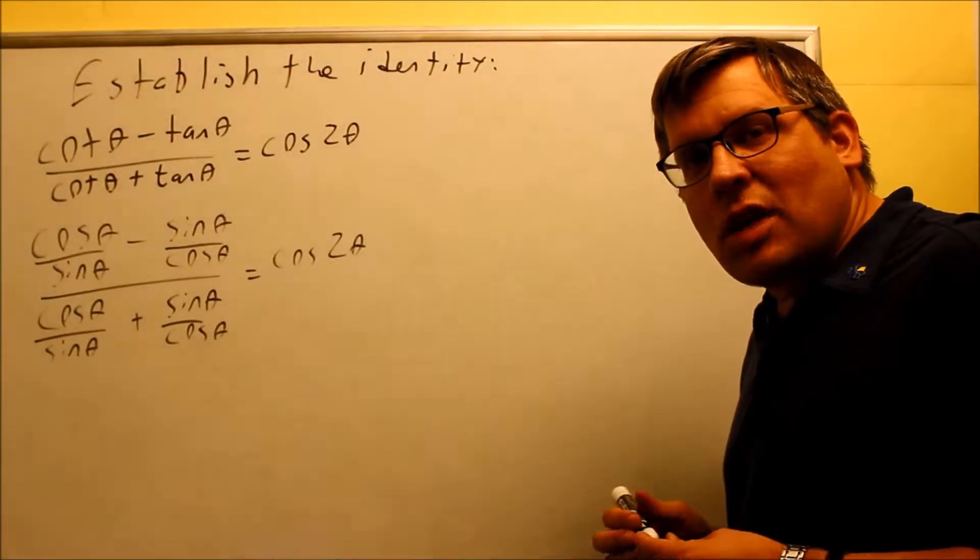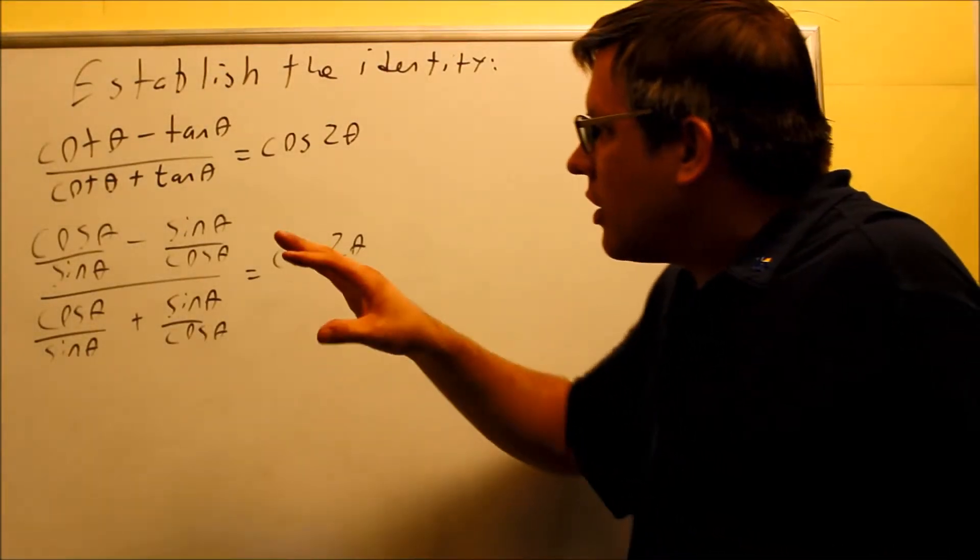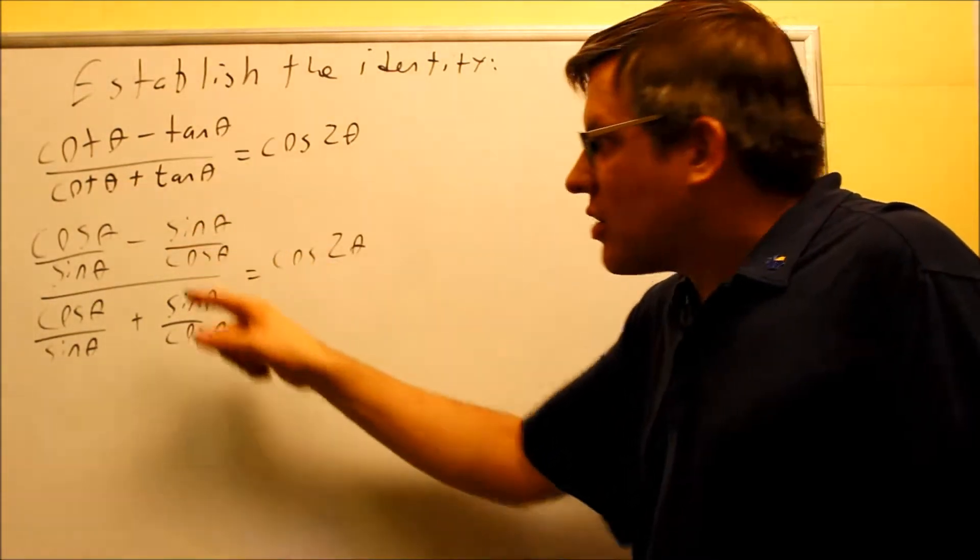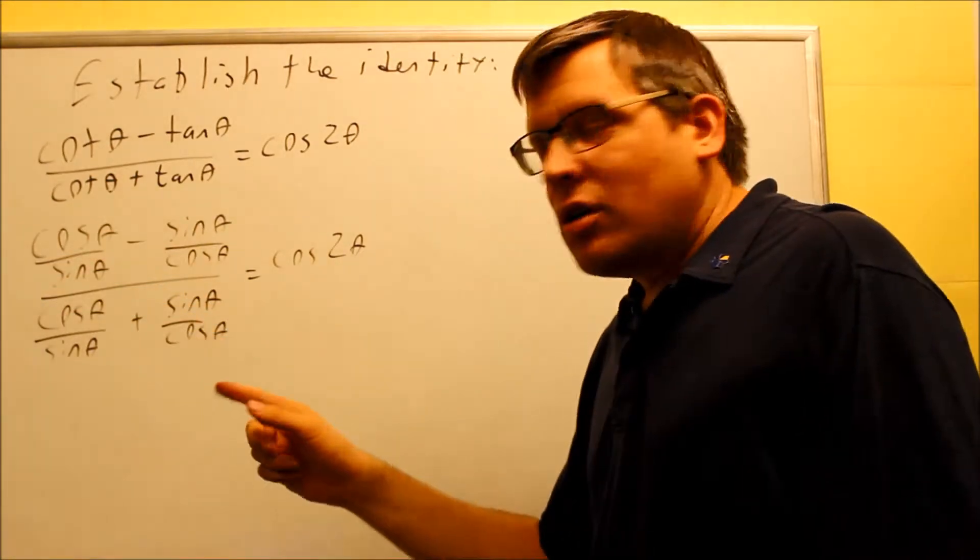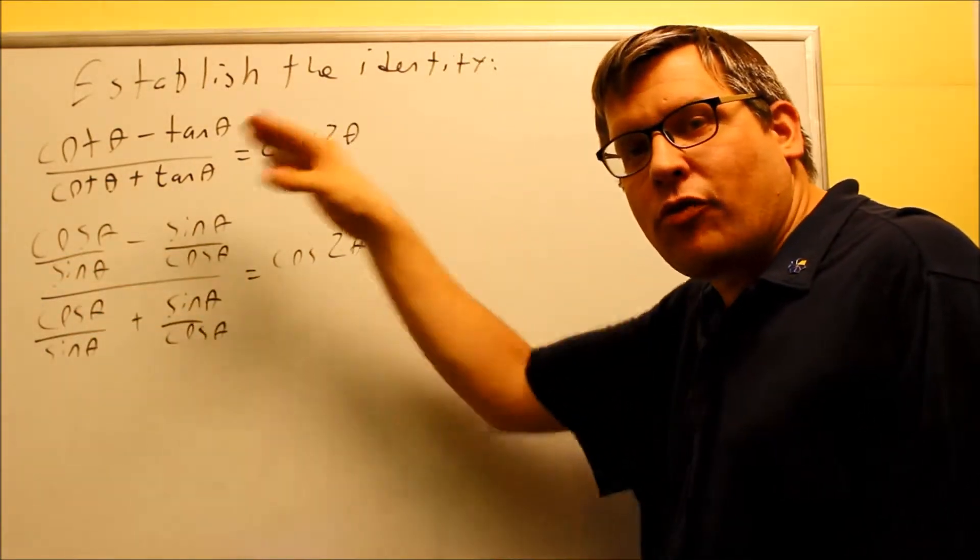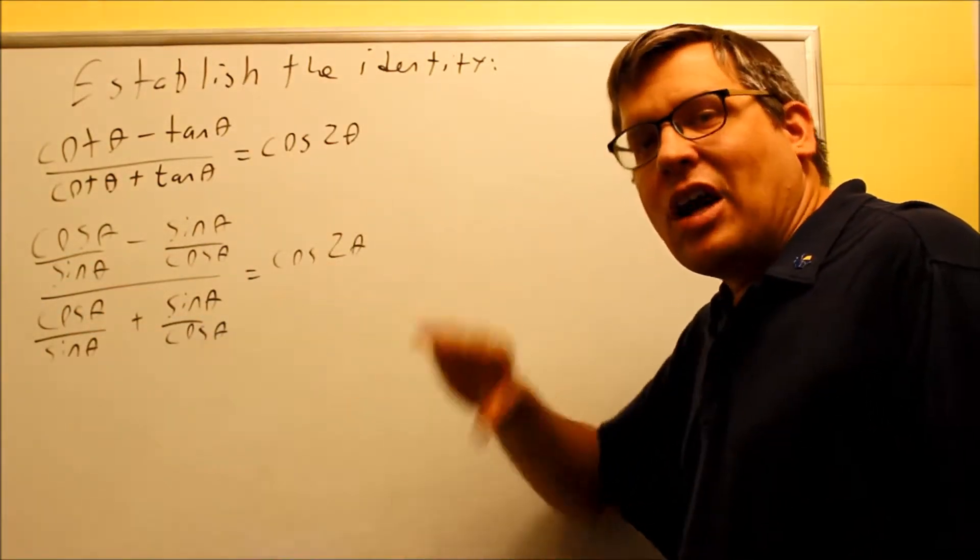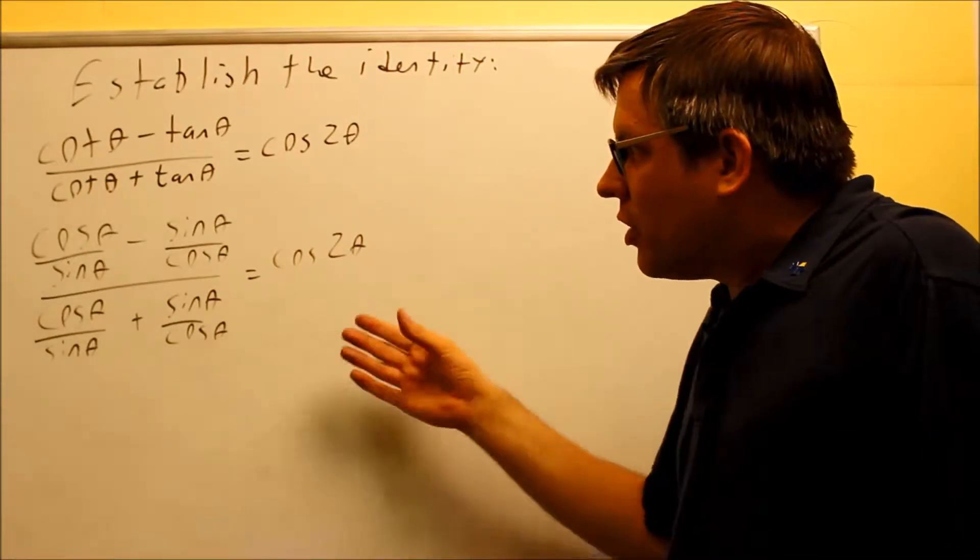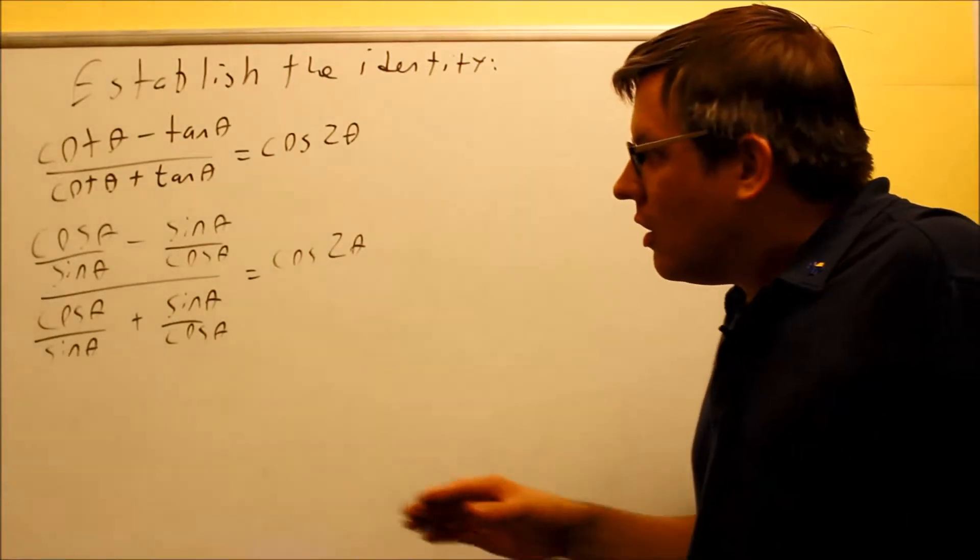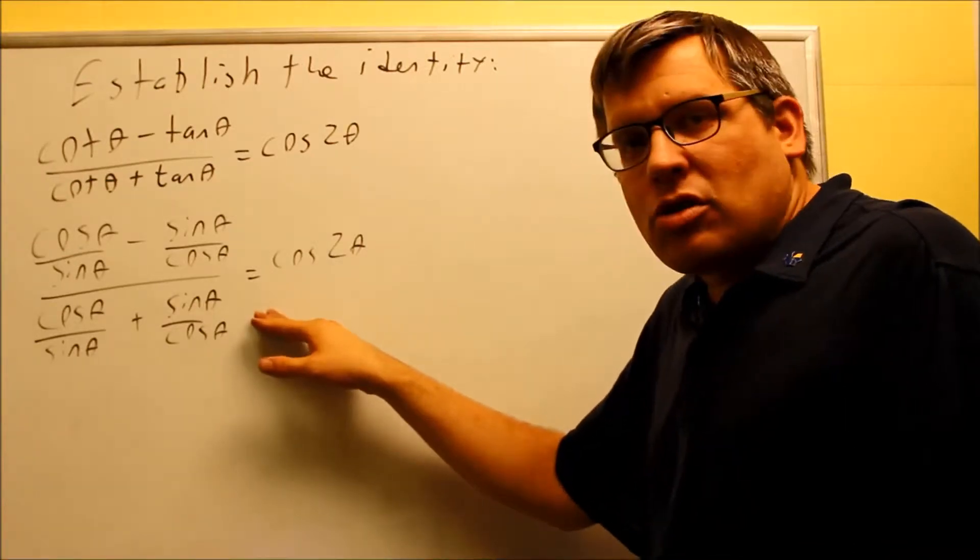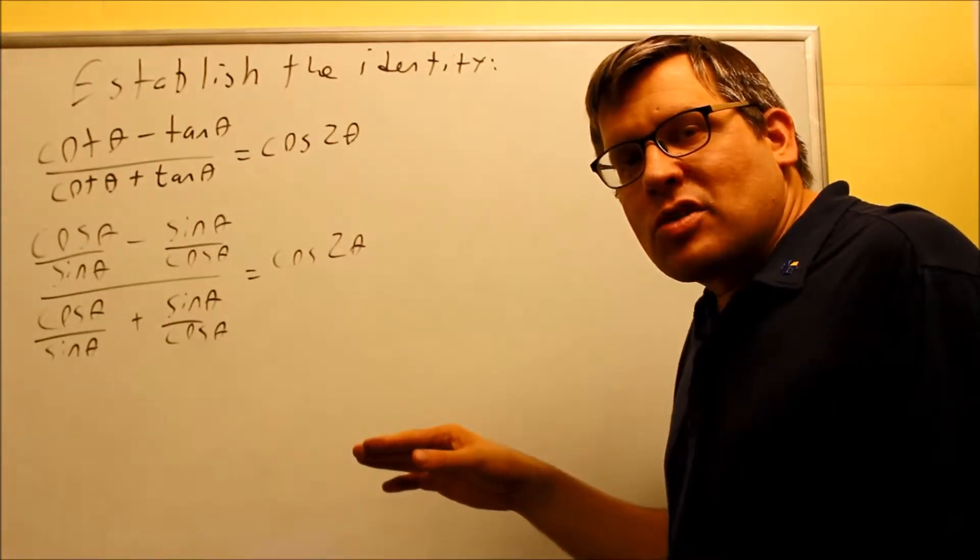Now the next step that you want to do is you want to get a common denominator because now I have two separate fractions. In the notes, I've got a common denominator for the top and a common denominator for the bottom. I have one fraction on top, one on the bottom. I flip that, and then when I flipped it, I got the final answer, I got things to cancel out. So instead of doing it that way, I want to show you another way that you can accomplish the same thing.